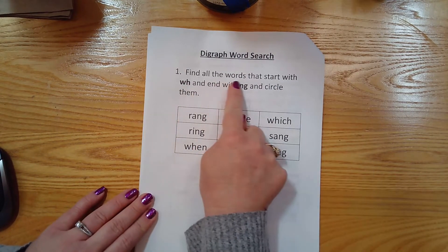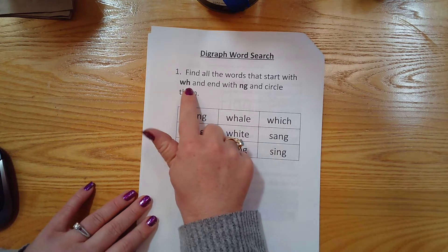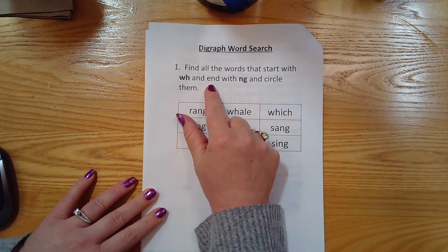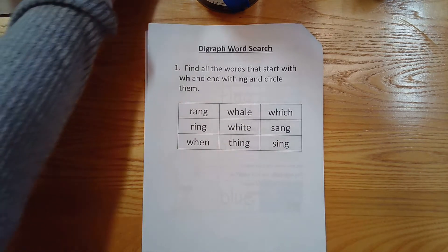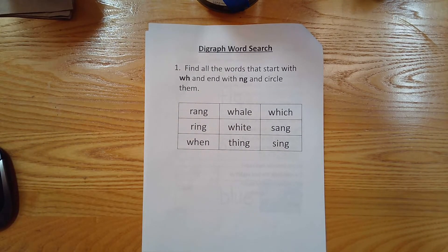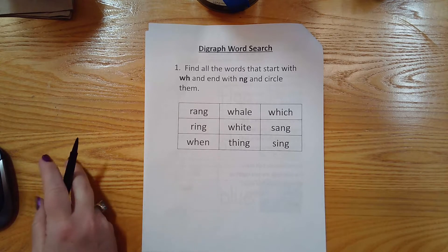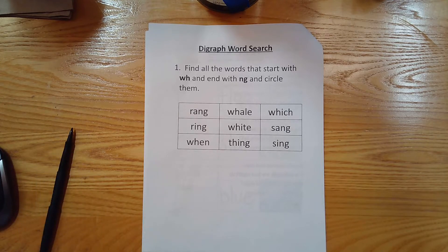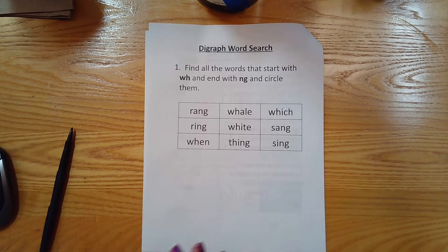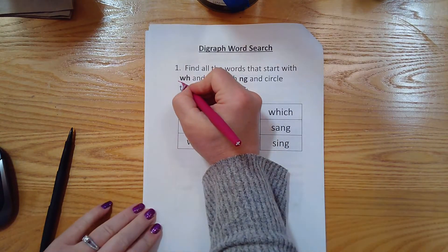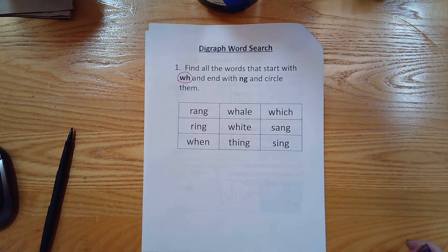Find all the words that start with W-H and end with N-G and circle them. We're gonna start with W-H first. I'm gonna take a color — I think I'll use a purple today. This one's kind of a purpley pink. You take whatever color you want, friends, and circle W-H up here with that color.